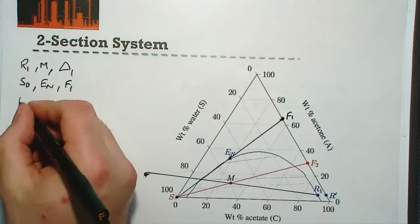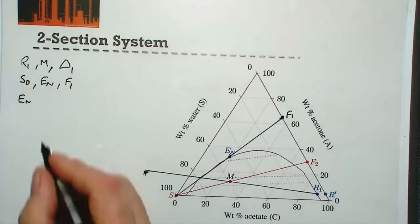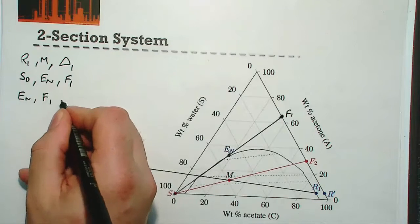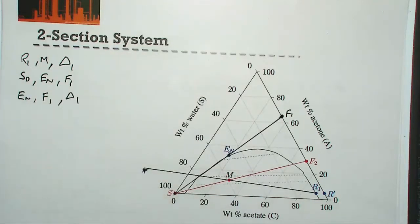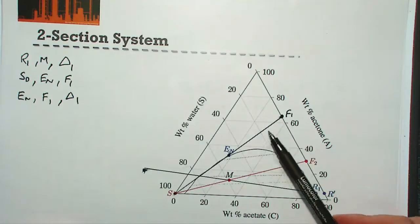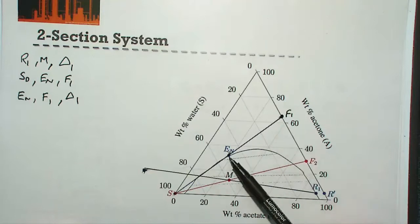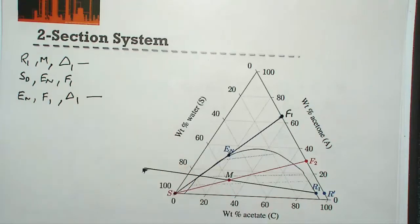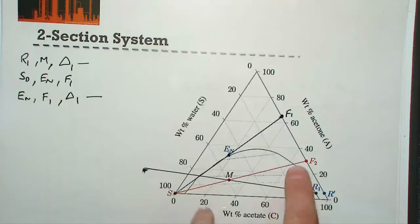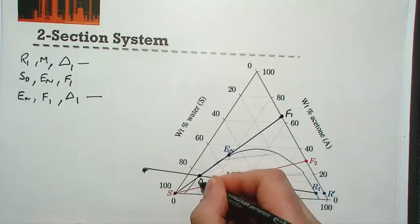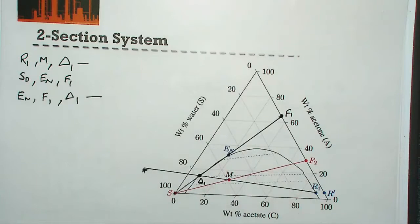The final set we determined was that our final extract, F1, and δ1 are all collinear. We already have a straight line passing through F1, E_N, and δ1. From those two expressions, we know the point where the line through R1 and M and the line through F1 and E_N meet — that gives us our first operating point δ1, the operating point for the bottom of the column.